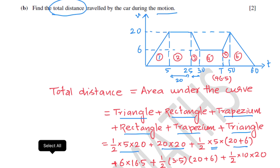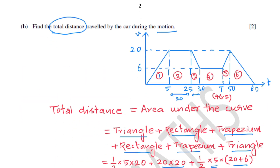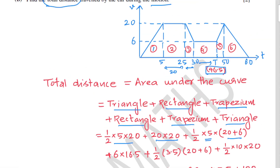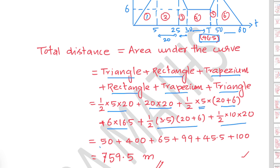Using t equal to 46.5, the rectangle width is t minus 30, that is 46.5 minus 30 equals 16.5, height 6, giving 6 times 16.5. Then a trapezium: half times 3.5 times (20 plus 6). Final triangle: half times 10 times 20. Summing gives 50 plus 400 plus 65 plus 99 plus 45.5 plus 100, totalling 759.5 meters.